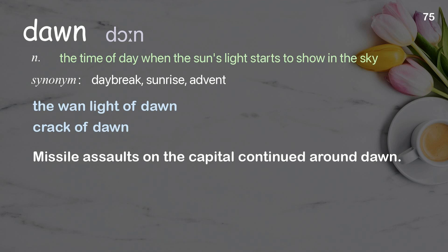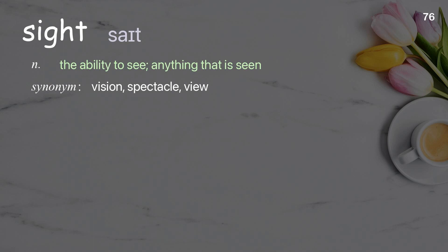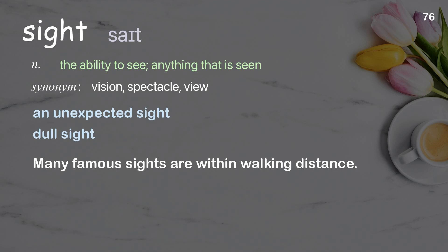Sight: the ability to see; anything that is seen. Examples: an unexpected sight, dull sight. Many famous sights are within walking distance.